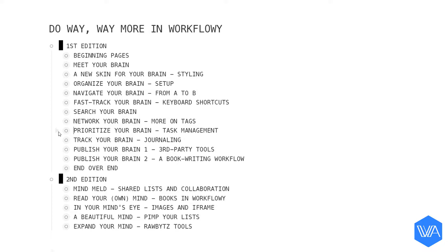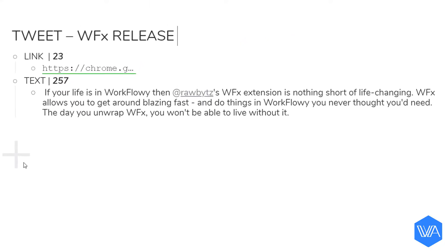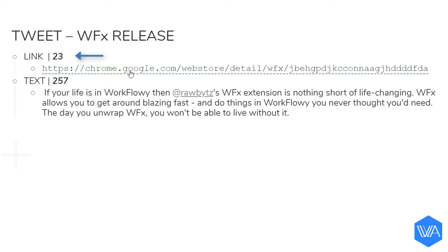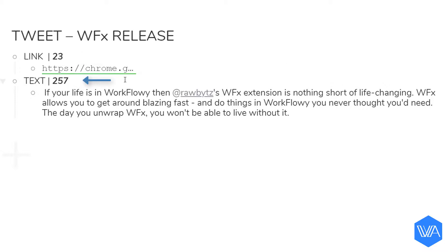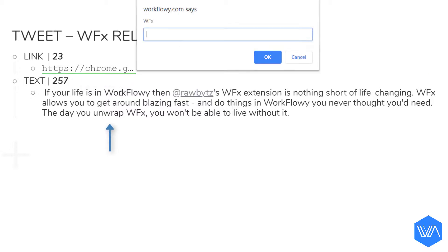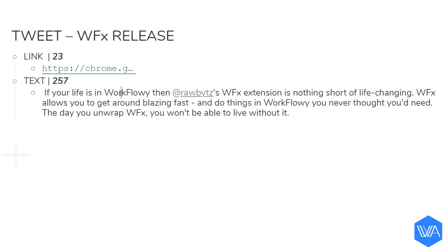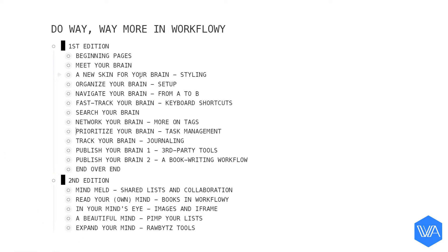Even on a much smaller scale — here's a tweet I'm planning on sending out when the WFX extension is released. Twitter allows for a maximum of 280 characters per tweet. Any link you post, no matter how long, will take up a maximum of 23 characters, leaving exactly 257 characters to work with. If I place my cursor in this bullet, you'll see that I've used up the maximum of 257 characters for this tweet. Perfect.